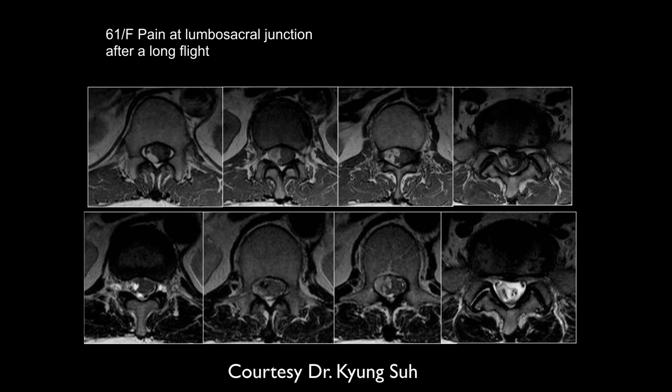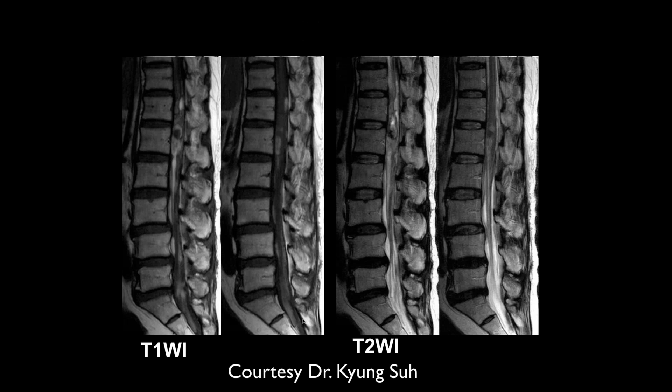Next: pain at the lumbosacral junction after a long flight. We have T1-weighted images and T2 images. There's a space-occupying process in the canal. On the contrast sagittal images, the differential includes drop metastases — though it's really the entire spine involved, suggesting diffuse meningeal metastatic disease. There's a lot of funny signal that could suggest metastatic disease; melanoma could look like that.